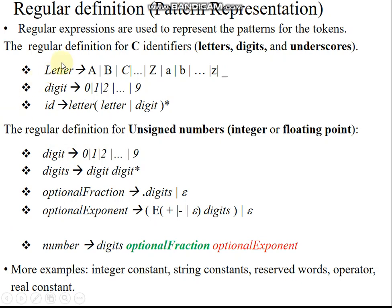In C language we have different identifiers. Identifiers are denoted using letters, digits, and underscores. The production for letter includes capital A to Z or small a to z, and in a C identifier the underscore is also added to the letter production.